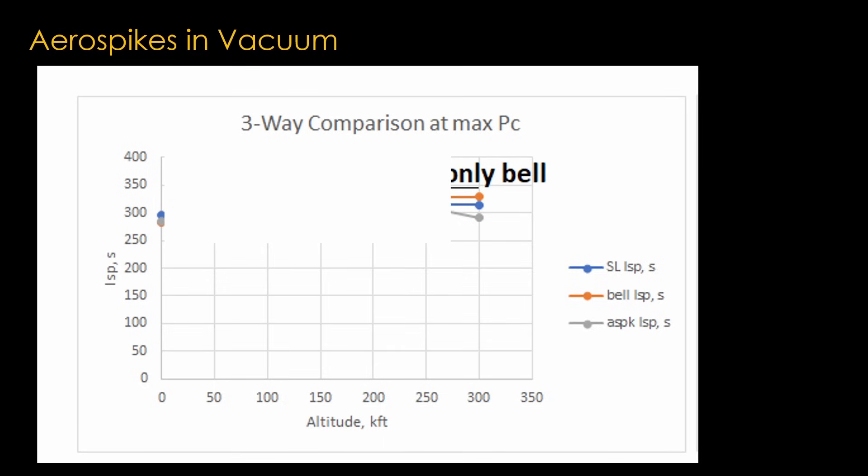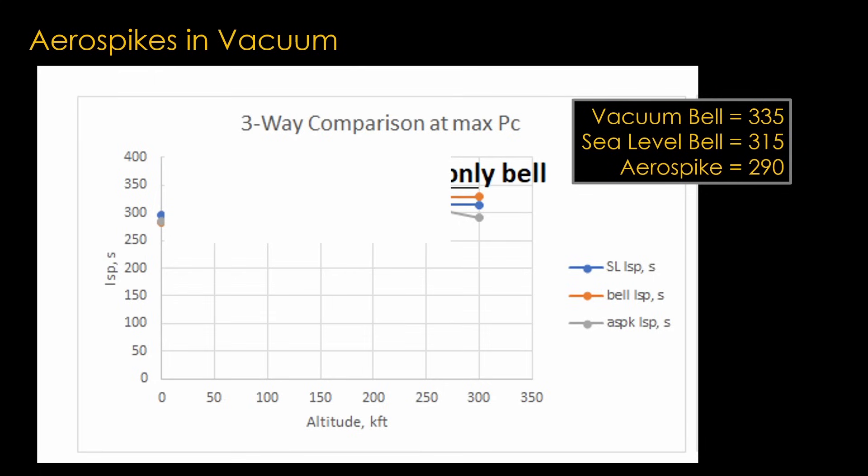Note that we ignore all the low-altitude stuff because we only care about vacuum performance. It's a little hard to read the graph, but what he found is that the vacuum bell nozzle gave a specific impulse of 335, a sea-level bell gave a specific impulse of 315, and an aerospike nozzle gave a specific impulse of 290.